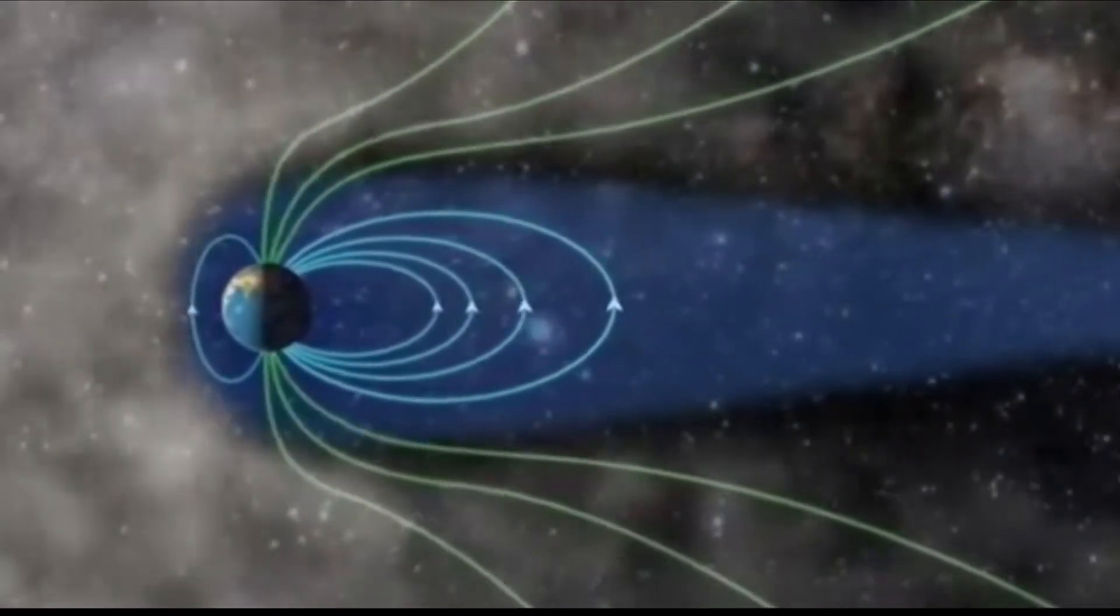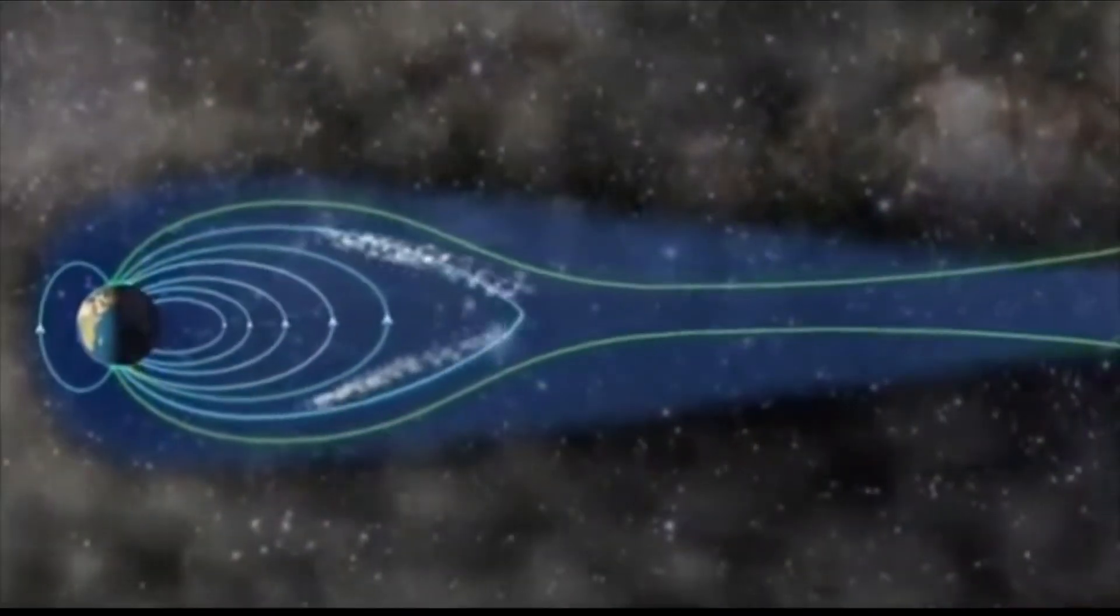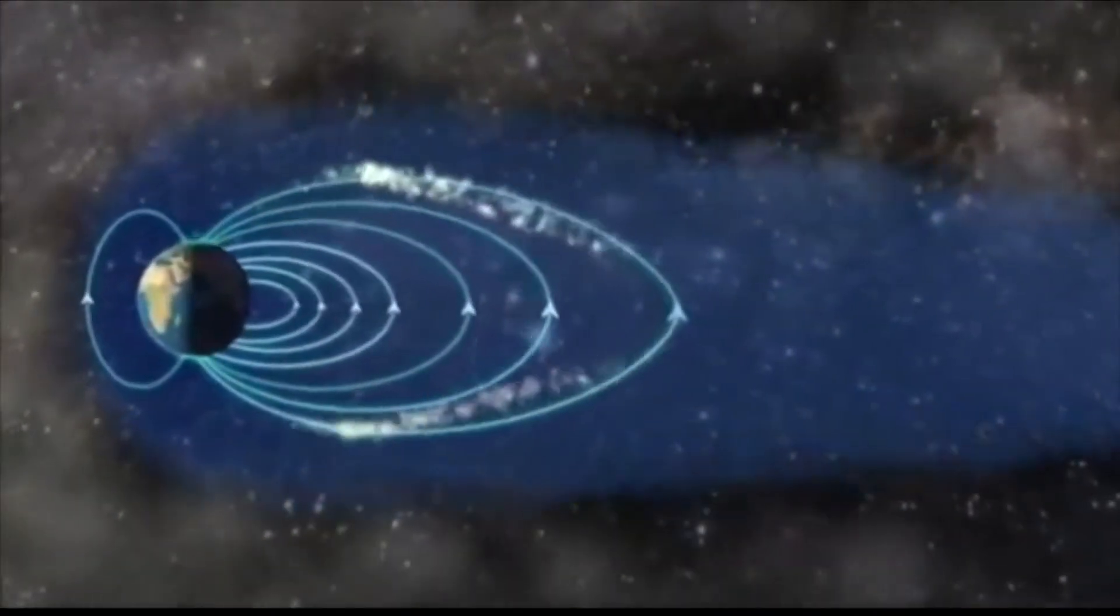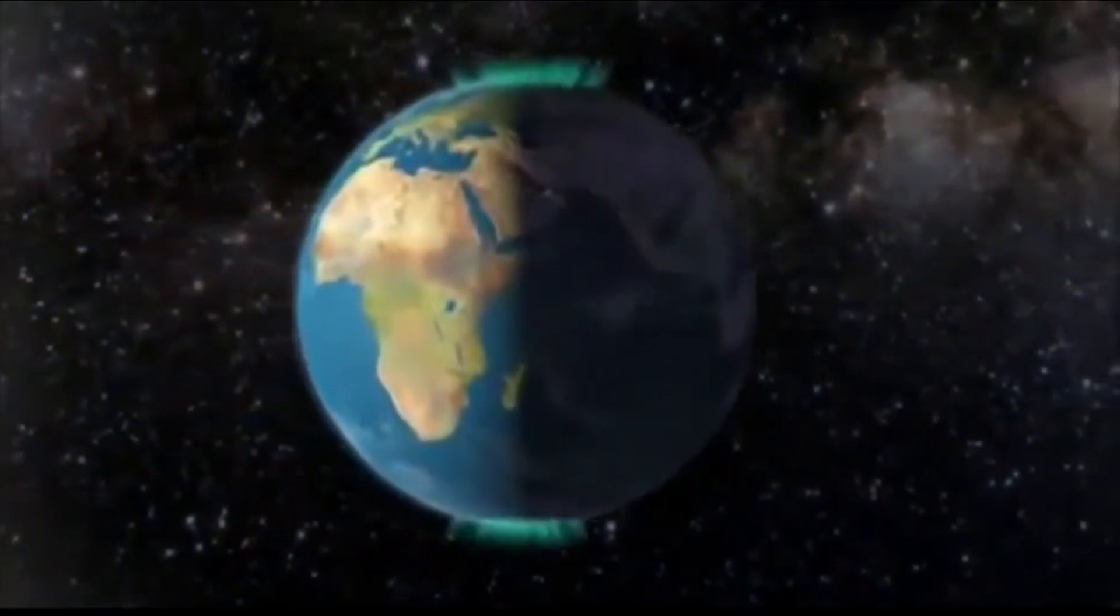Then the magnetic fields stretch farther back and couple together again. The magnetic rubber band breaks and plasma streams along the magnetic lines toward the poles on the night side. This is the nighttime aurora.